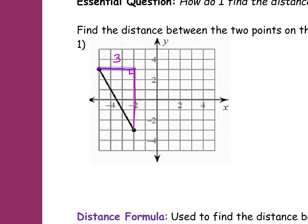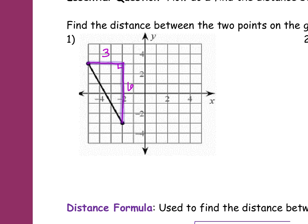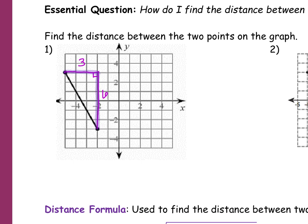And how long is the other side? Six. Are you sure? Yeah. So now what do I do to find the length between my two points? That big word — the Pythagorean theorem. Can I just call this side X? So X squared is going to equal 3 squared plus 6 squared. So X squared equals 9 plus 36. What's 9 plus 36? 45.